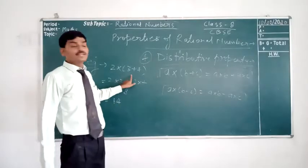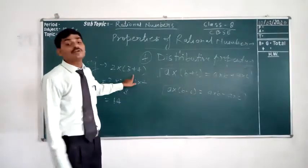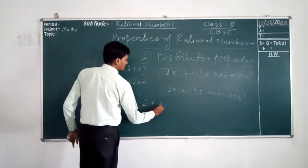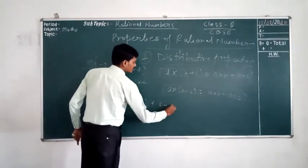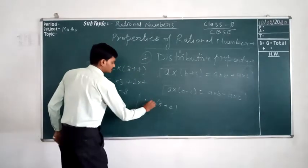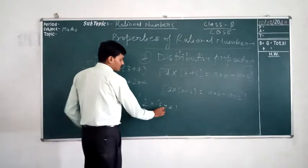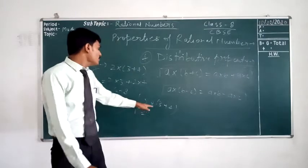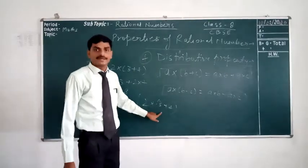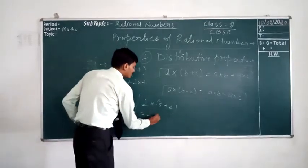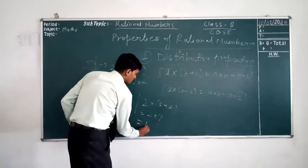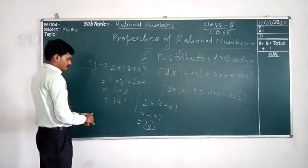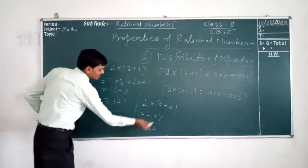Now we will also solve according to BODMAS. We solve the bracket first: 3 + 4 = 7, then 2 × 7 = 14. Here is the same answer — 14. So this is the distributive property. You can solve this type of question either way; the answer will be the same.